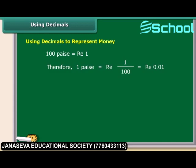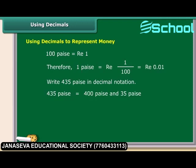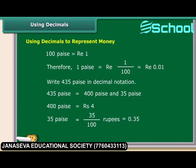Let us use decimal notation to write 435 paise. 435 paise may be split as 400 paise and 35 paise. 400 paise are equal to rupees 4. 35 paise are equal to 35/100 rupees, that is 0.35. So 435 paise are equal to rupees 4.35.